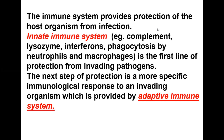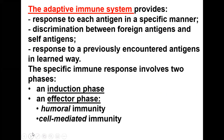Our immune system also includes the adaptive immune system. The subject of pharmacology is to discuss the function of the adaptive immune system. It is the next step of protection — a more specific immunological response to an invading organism. The specific response includes two phases: an induction phase and an effector phase. The effector phase consists of humoral immunity and cell-mediated immunity.